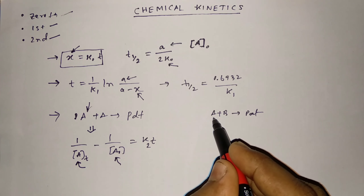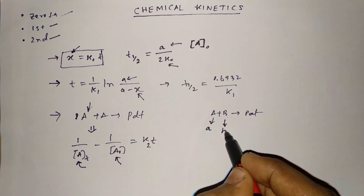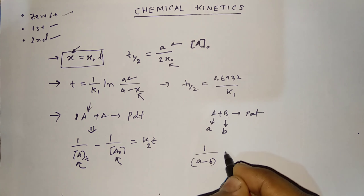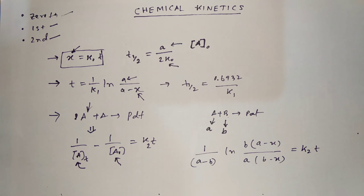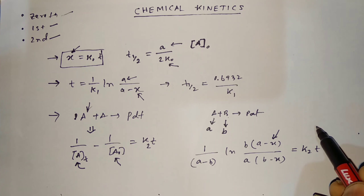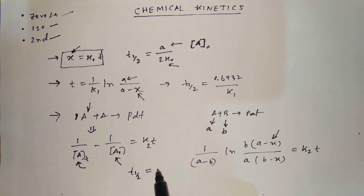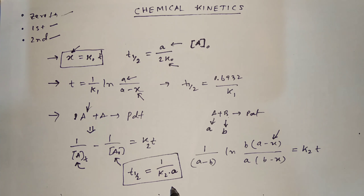If A + B gives product and the two reactants are different, with initial concentration of A as 'a' and initial concentration of B as 'b', the rate equation is: (1/(A−B)) · ln[(B · (A−x)) / (A · (B−x))] = k₂t, where x is the concentration of product at time t. Also remember the half-life for second order: t½ = 1 / (k₂ · A), where A is the initial concentration of the reactant.